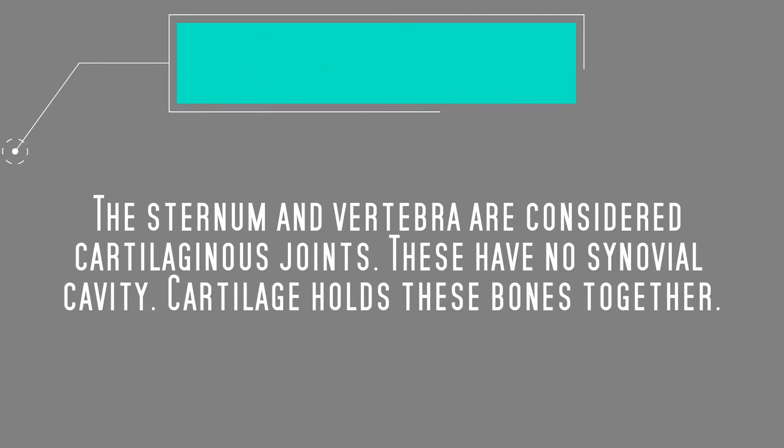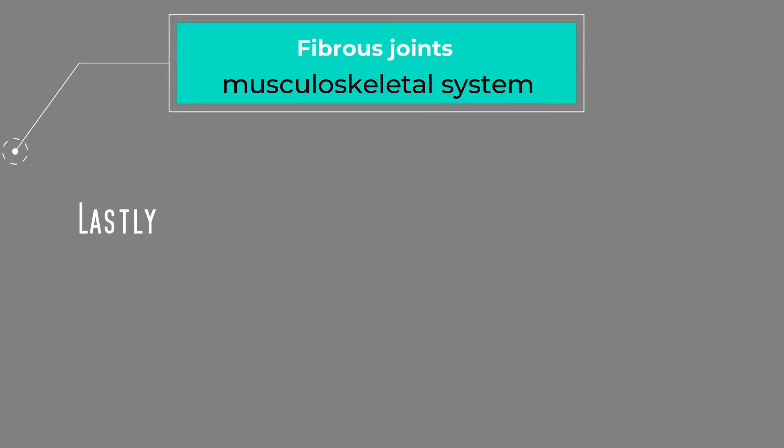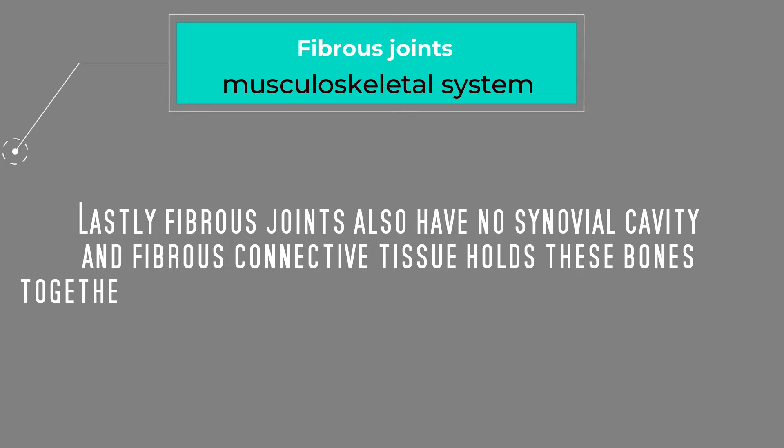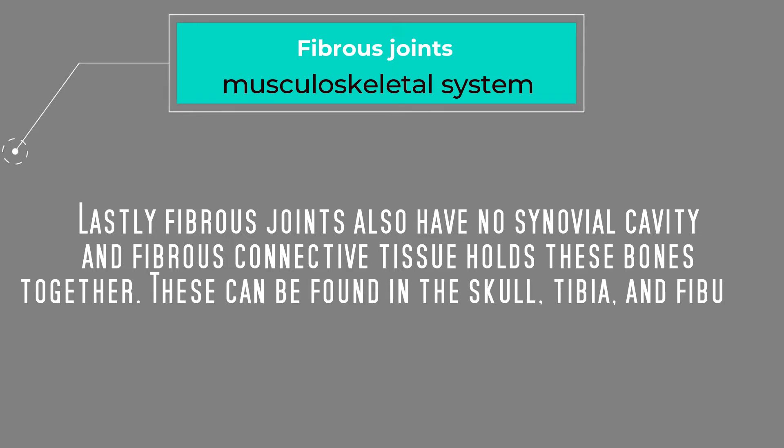Lastly, fibrous joints also have no synovial cavity, and fibrous connective tissue holds these joints together. This type of joint can be found in the skull, tibia, and fibula.